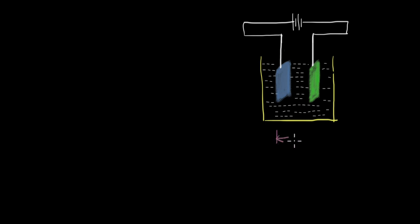I have this electrolytic cell here — there's a power source, let's say a battery, and we have two plates dipped in some electrolytic solution. The distance between both plates is L and the area of each plate is A. The circuit is complete, so electrons leaving from the negative terminal go back and complete the circuit. So how is conduction taking place in the solution?